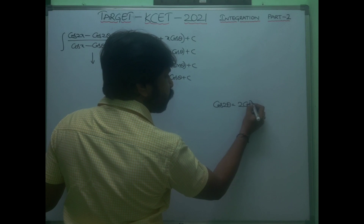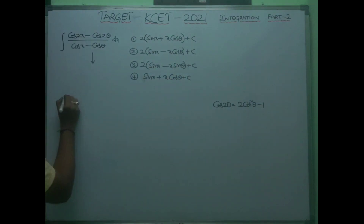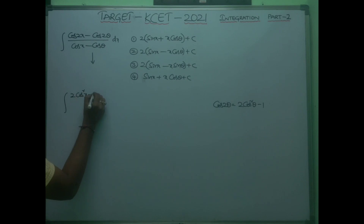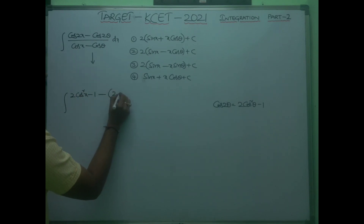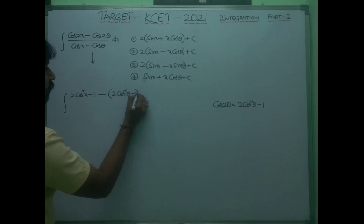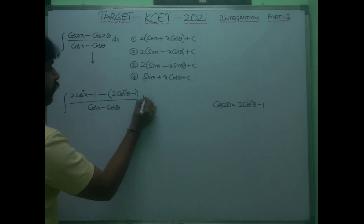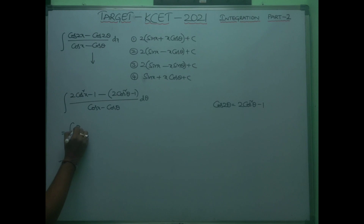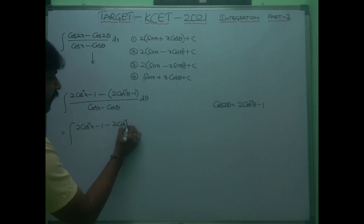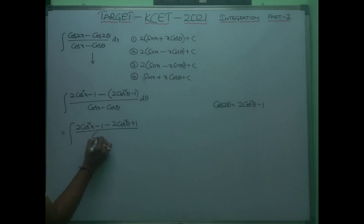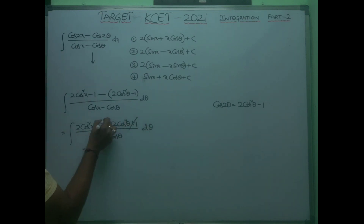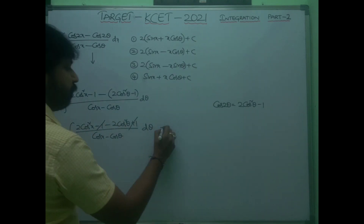cos 2θ can be written as 2cos²θ − 1. So the numerator becomes: (2cos²x − 1) − (2cos²θ − 1), all over (cos x − cos θ) dx. Writing it out: integral of (2cos²x − 1 − 2cos²θ + 1) / (cos x − cos θ) dx.